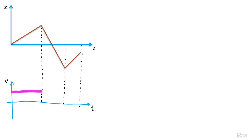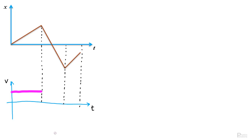We move to the next section. Here the slope is negative — the line is going down as time goes up, so the velocity is negative. The velocity in this section will be below the axis. The next question: is the velocity constant or not? The line is straight and not curvy, so the velocity is constant. Therefore, the velocity looks like a negative, completely horizontal line — representing a constant but negative velocity.